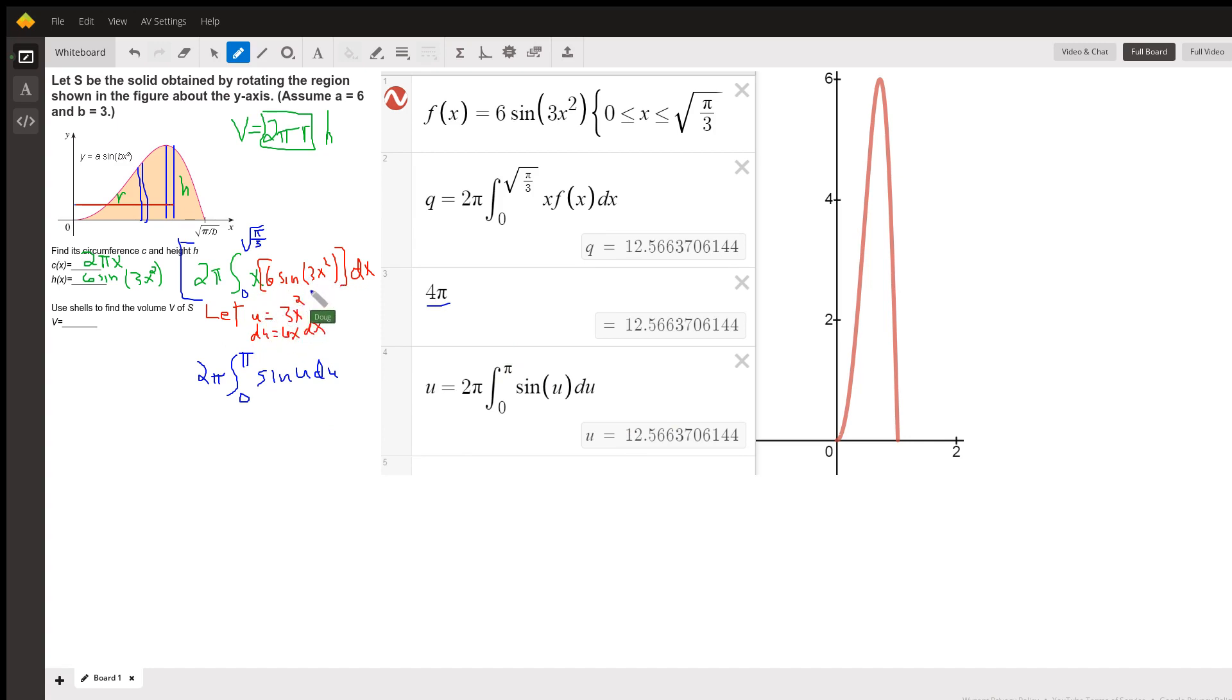So the idea is that if we let u equal 3x², du will be 6x dx. Now we're ready to substitute. We're going to rewrite this integral in terms of u. We've still got a 2π out front—that's a constant. When x is zero, u is still zero. When x is the square root of π over three, square that and you get π over three. Three times π over three is π, so that would change that upper limit.